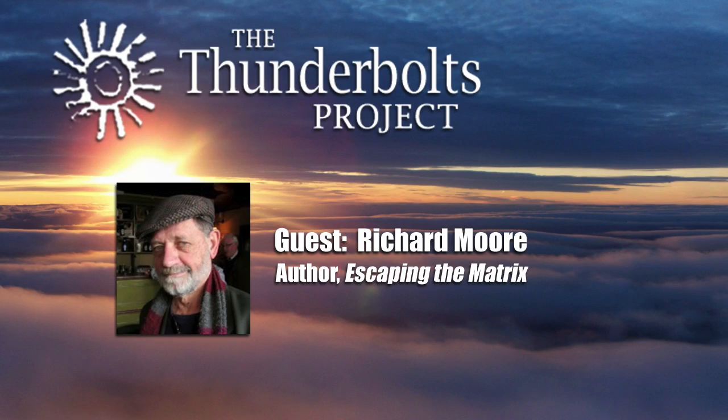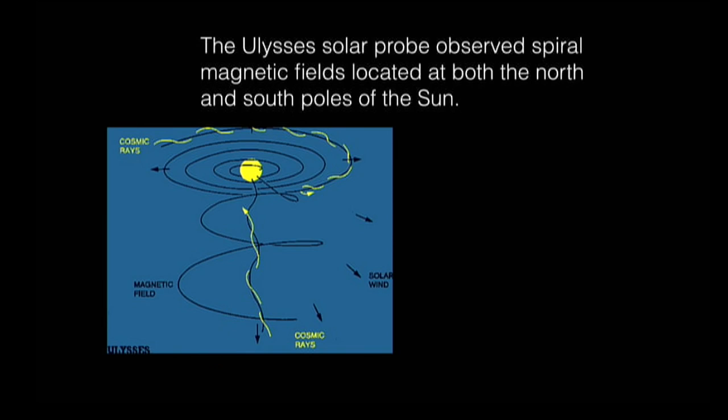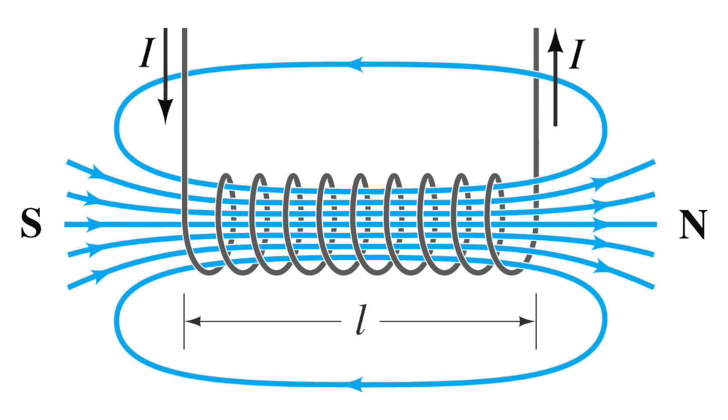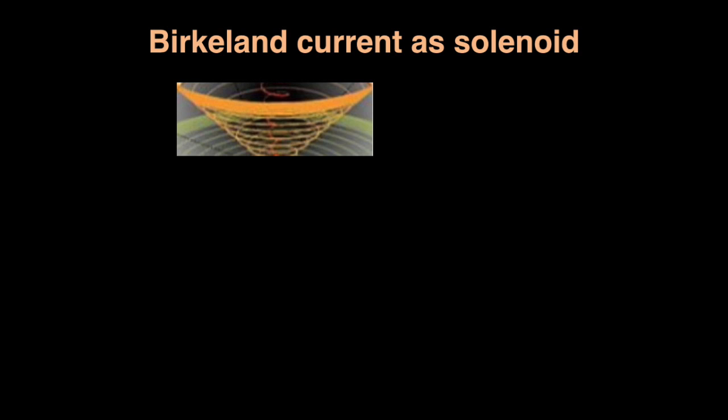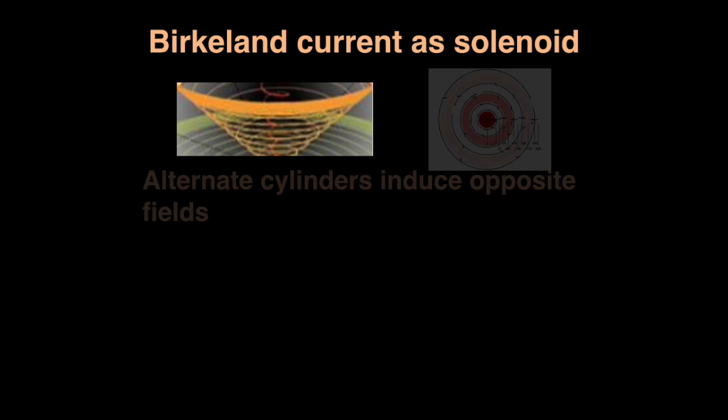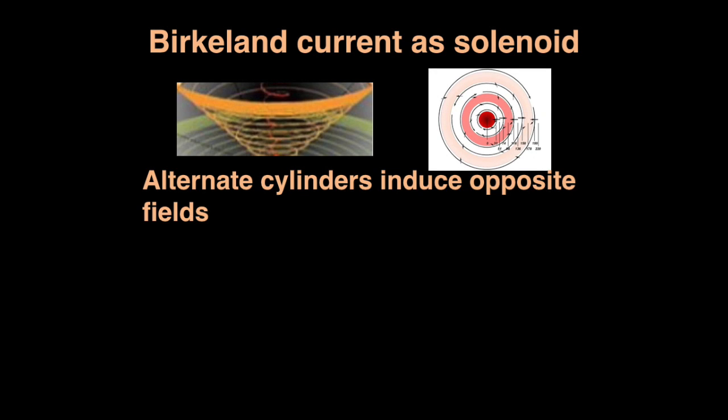So I started wanting to think, what could the EU say about the sun's magnetic field? Is it an electromagnet? We've got these huge currents coming in at the north and south poles, and so maybe they're acting sort of playing the same role as a solenoid, creating an electromagnet. Let's look now at a Birkeland current coming in at the north pole. We'll just take half of it for now. There's one at the south pole as well. Try to think of the Birkeland current as if it were a solenoid. The problem with that is that the Birkeland current is made up of concentric cylinders, and each cylinder tries to induce an opposite field.